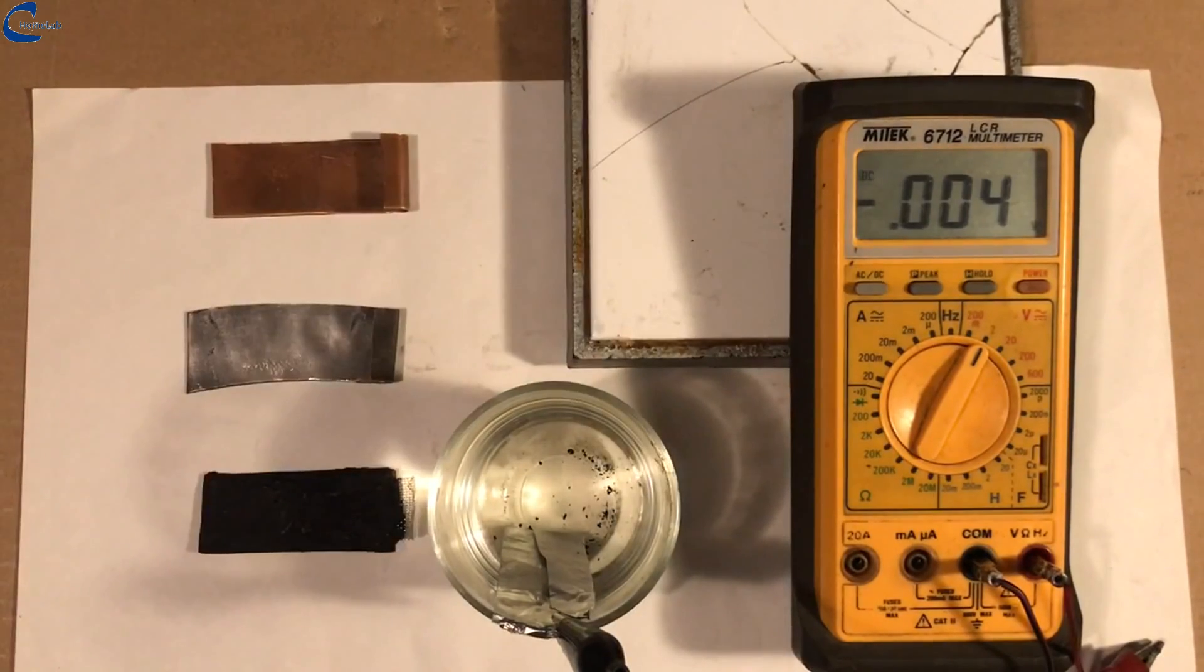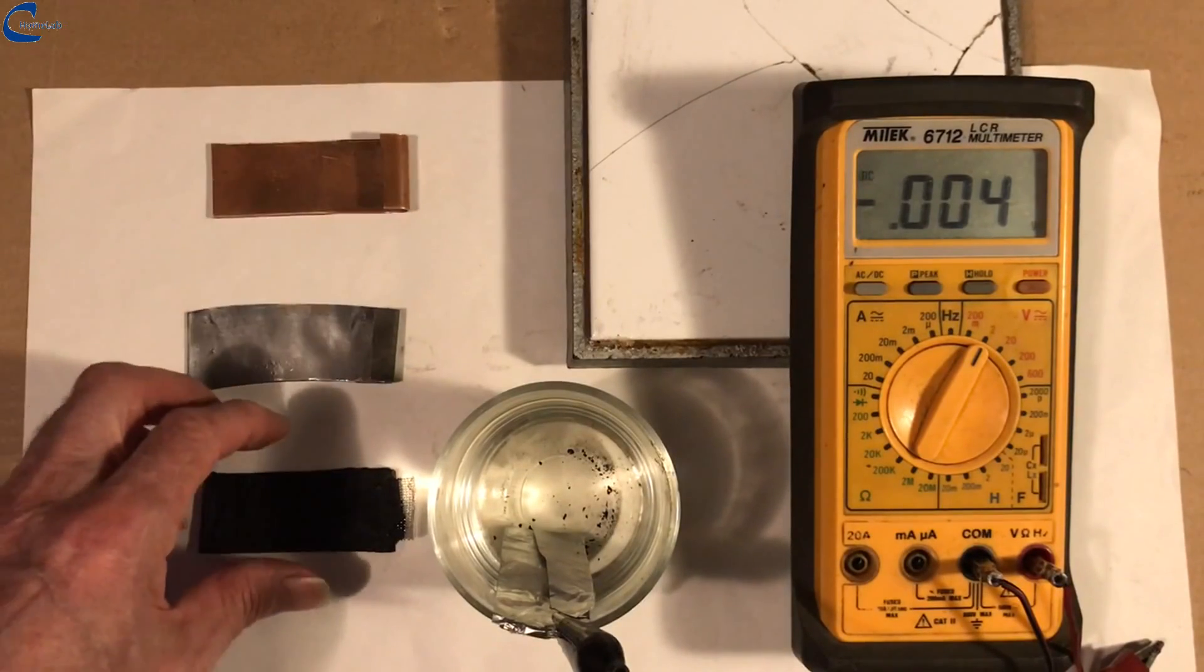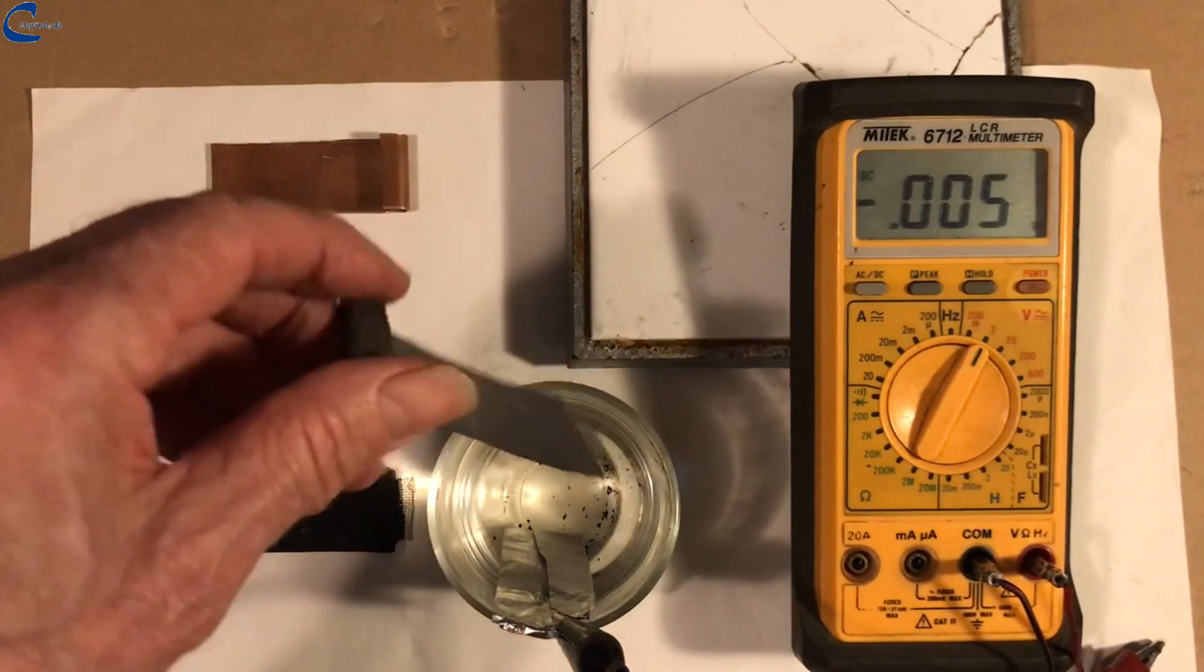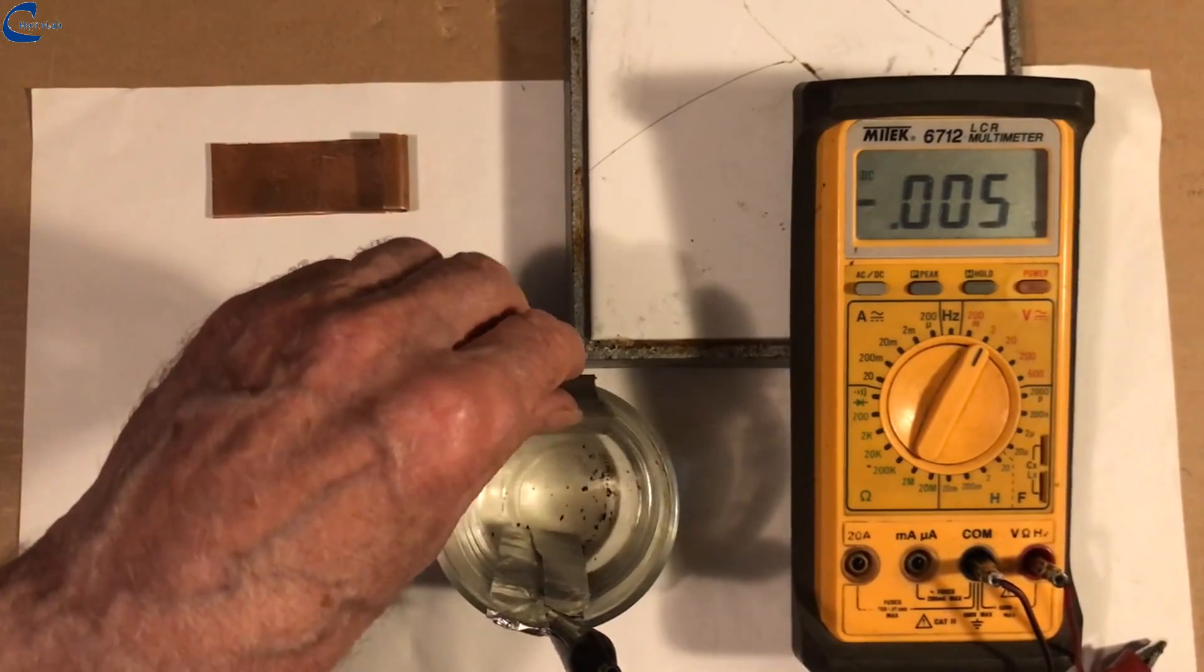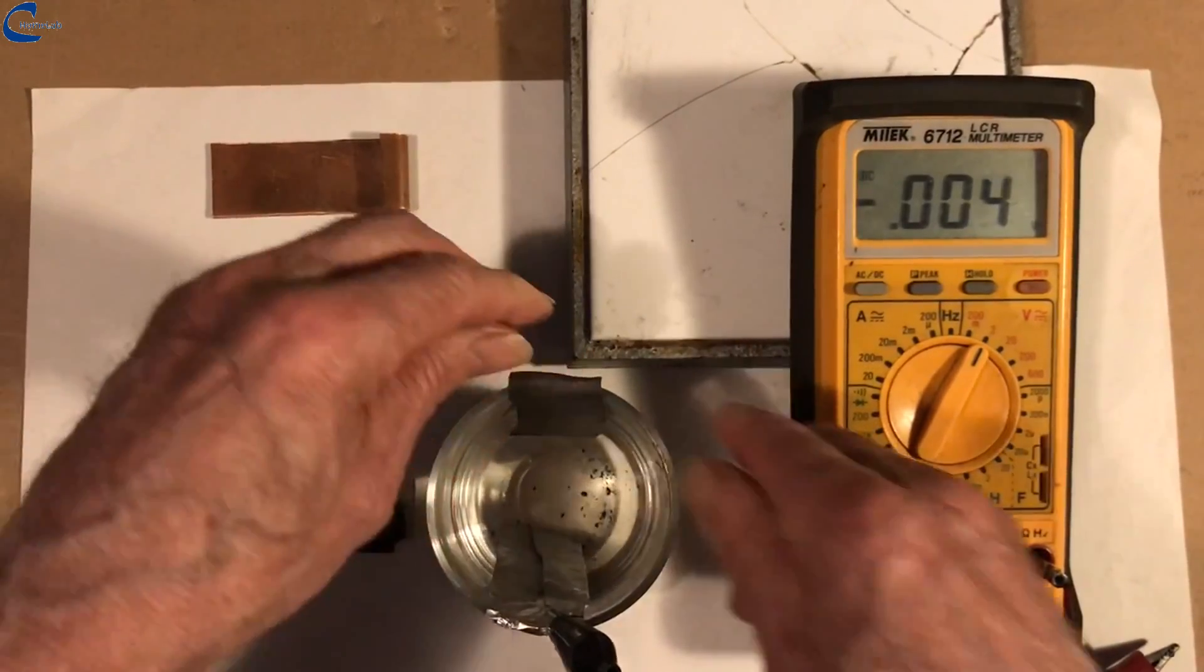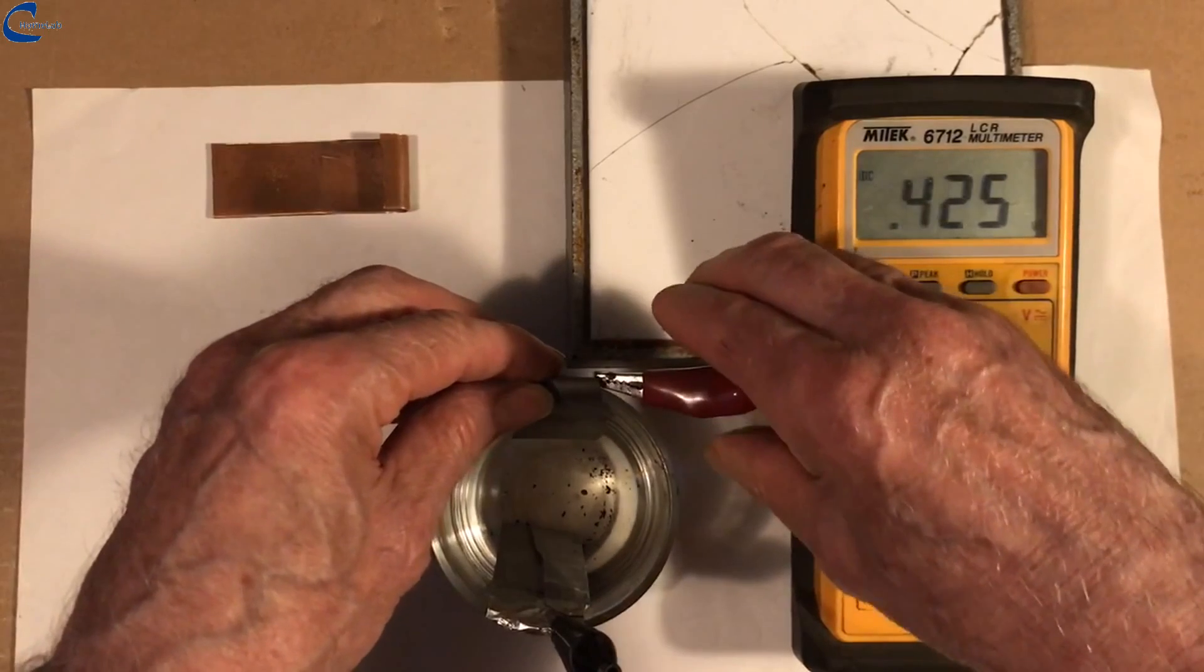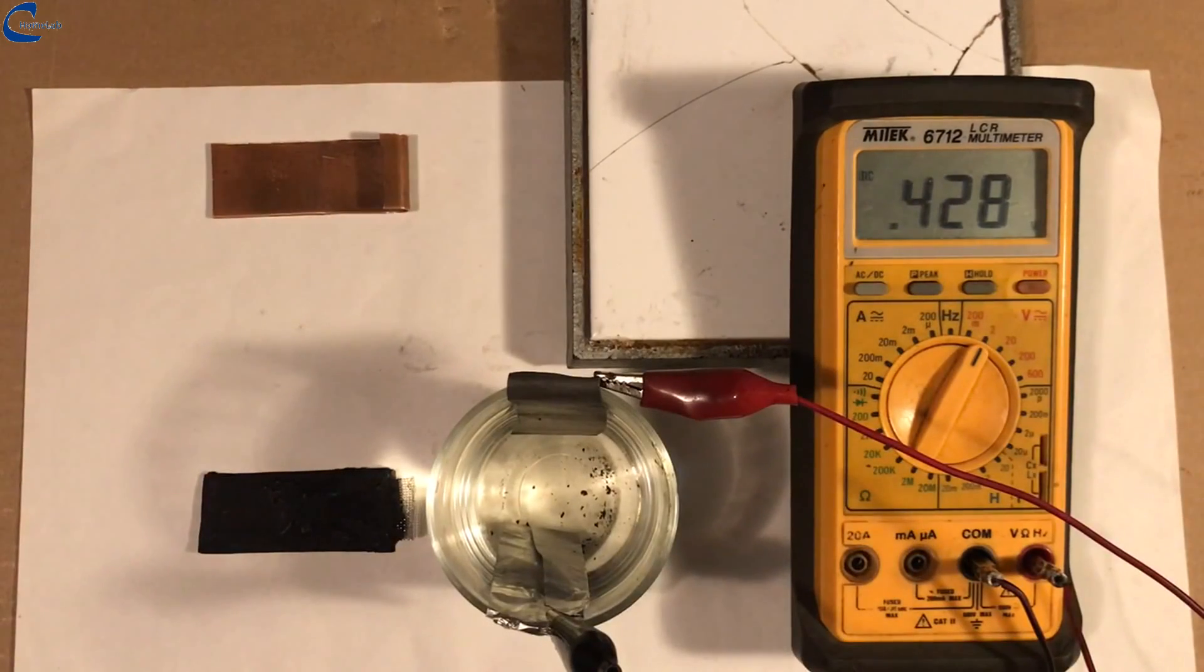And now the measurement of the no-load voltage of the cell. In the beaker filled with 150ml of bleach, I fixed an aluminum foil connected to the negative of the voltmeter. The first electrode inserted is the lead electrode, measuring 0.428 volts.